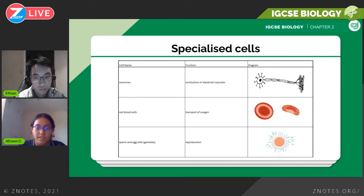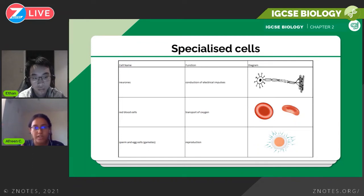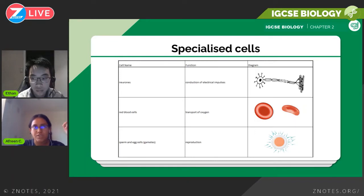Then there are sperm and egg cells, also known as gametes, and they're used in reproduction. They have adaptations like the flagellum in the sperm and the jelly coating around the egg. You'll look more at those adaptations in chapter 16, the reproduction chapter.